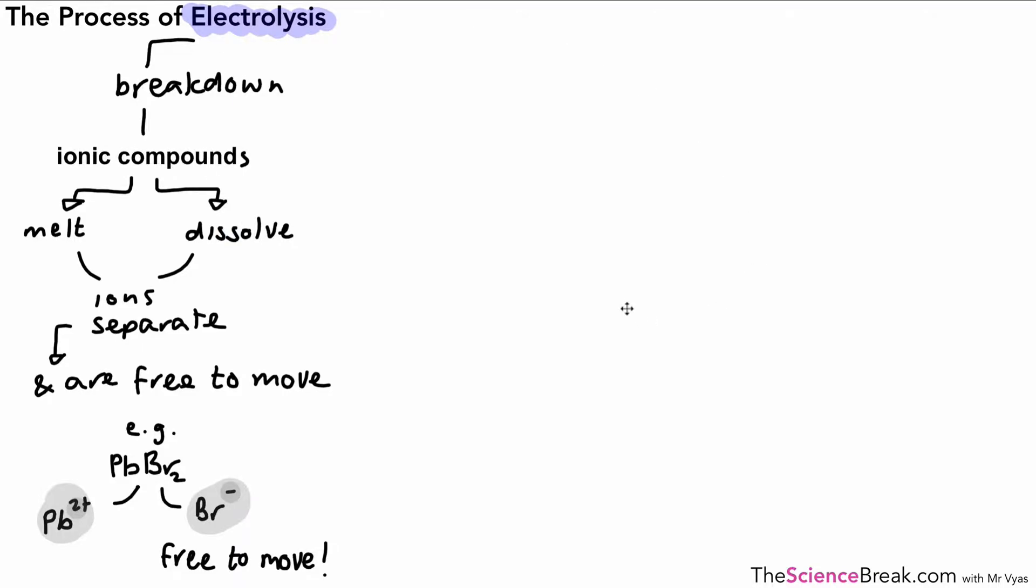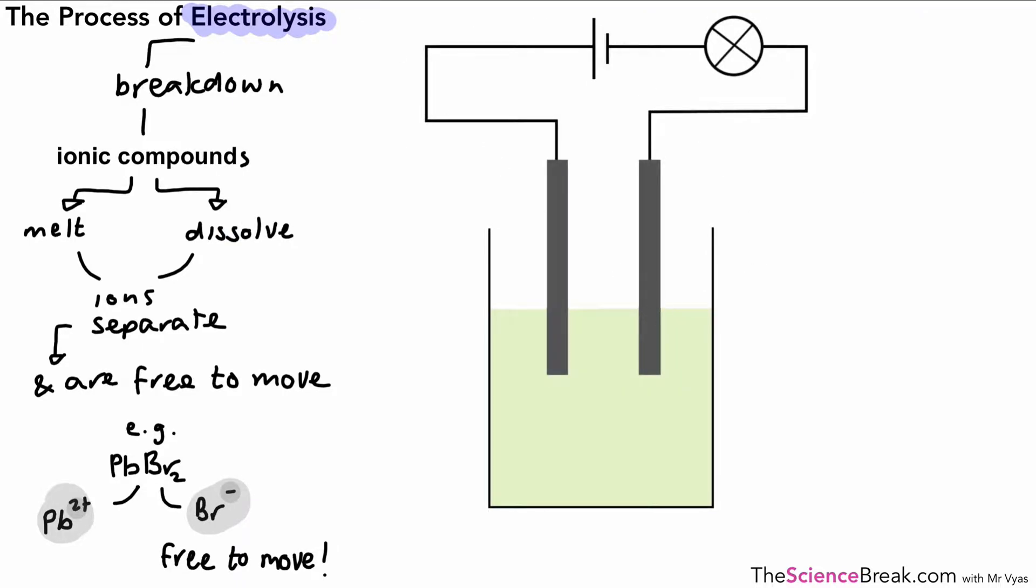Here's the equipment that we use to do our electrolysis. We've got two structures there which we'll name in a moment. Then we have the liquid where we have the free ions that have been separated out when we've melted, for example, the lead bromide. That liquid has a name—we call it the electrolyte.